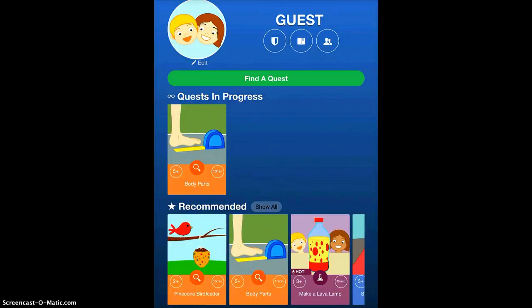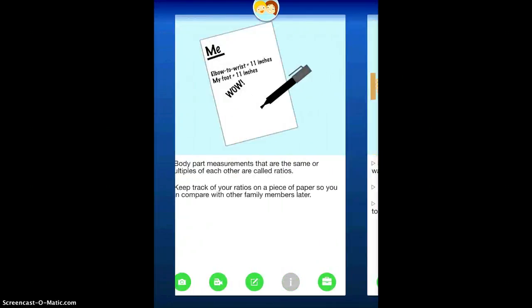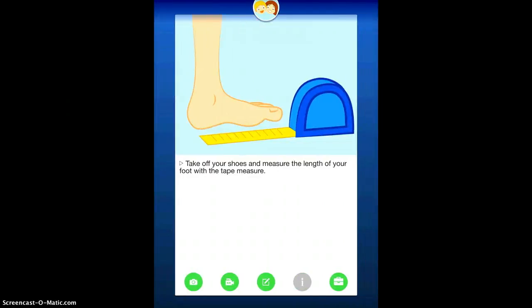So I will go ahead and tap the body parts one that I have in progress here and I'm going to go back to the first one so that you can see it from the beginning but here's exactly what it does. It basically gives you directions of things that you should step through.